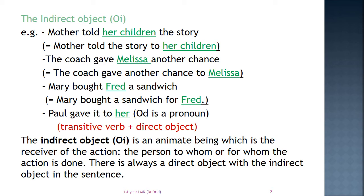The third example: Mary bought Fred a sandwich. Mary bought what? She bought a sandwich. So, a sandwich is the direct object. For whom? For Fred. Fred is the receiver of the action — Fred is the indirect object. So, Mary bought a sandwich for Fred. The last example: Paul gave it to her. Here the direct object is 'it' and the indirect object is 'her'. In this case we cannot reverse the positions because we are using pronouns.